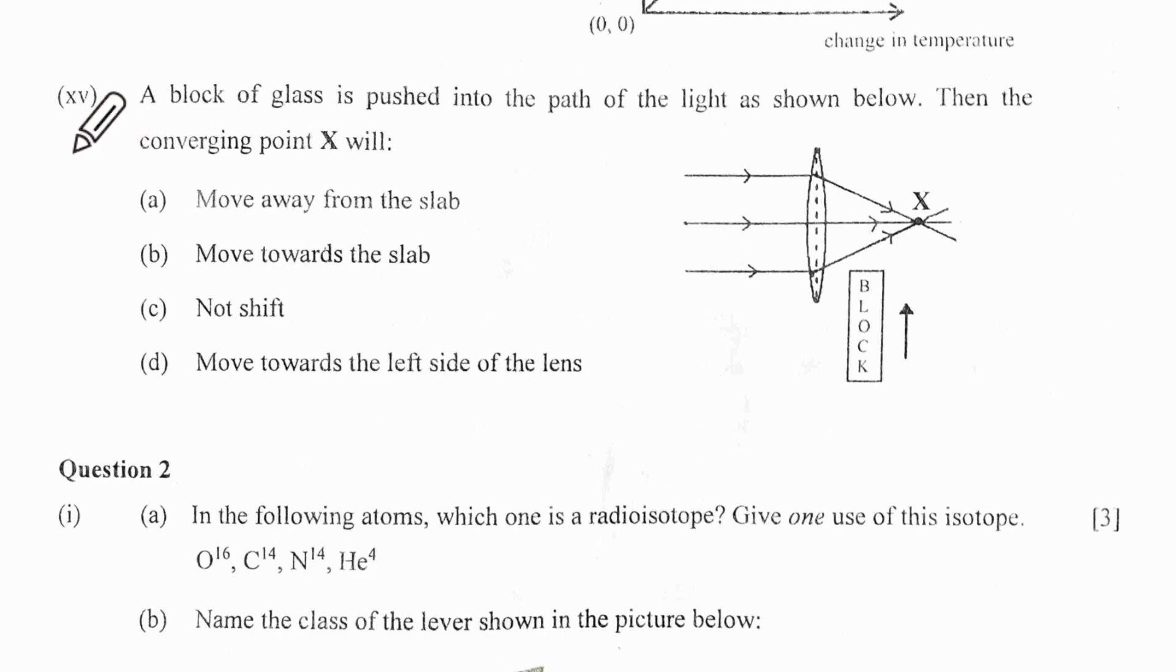Let us come to the last MCQ. The block of glass is pushed into the path of light as shown below. Then the converging point X will be... What will happen to the converging point? I am going to move this block like this.